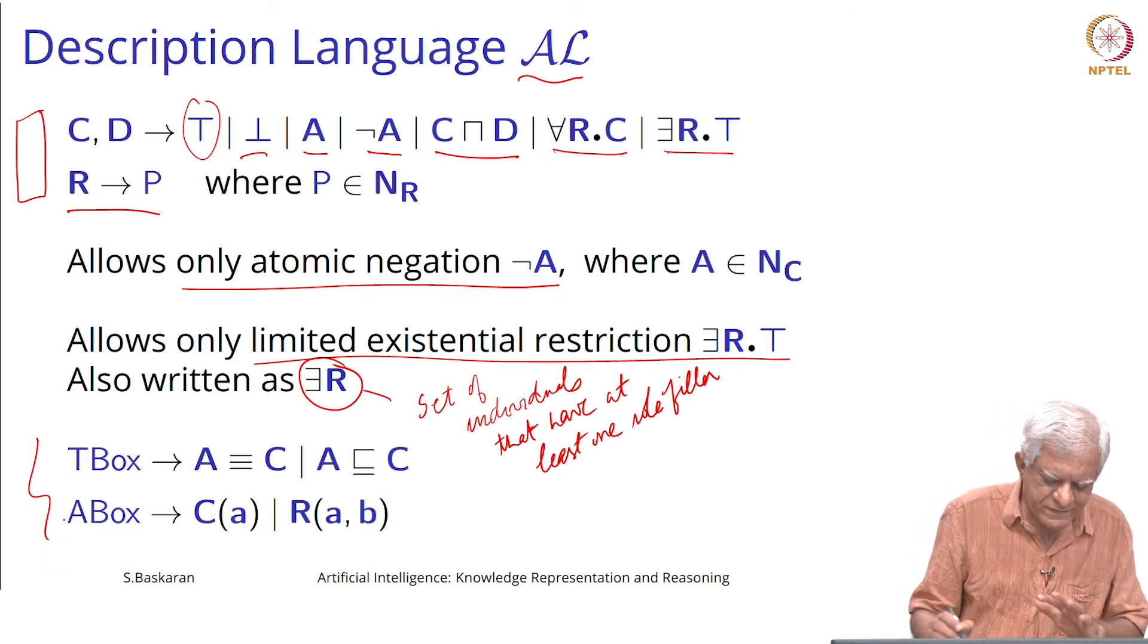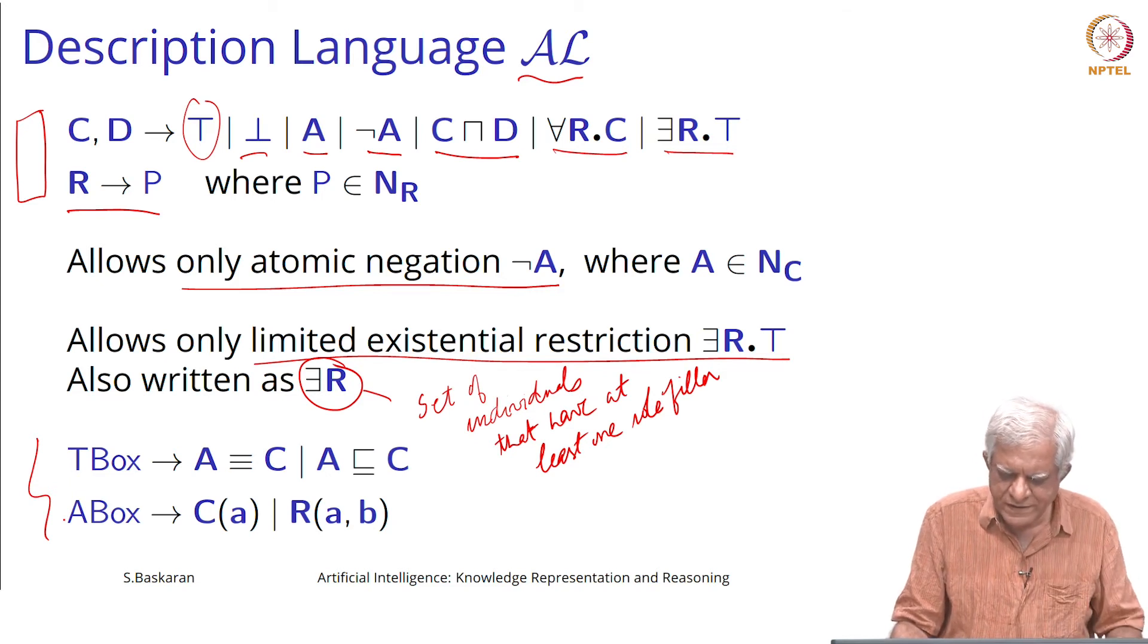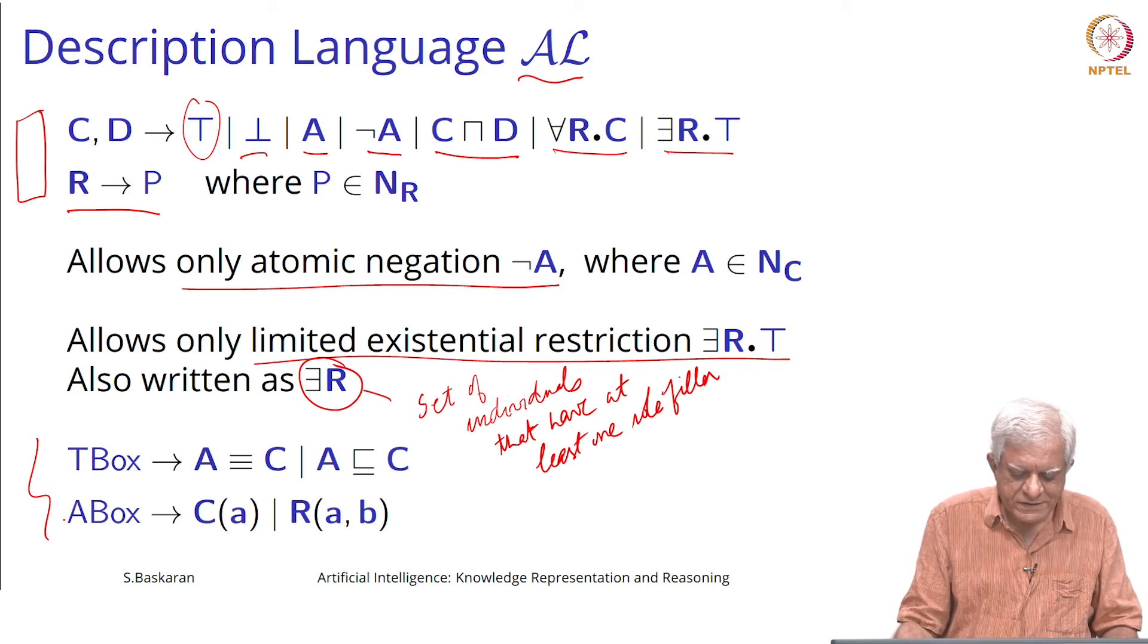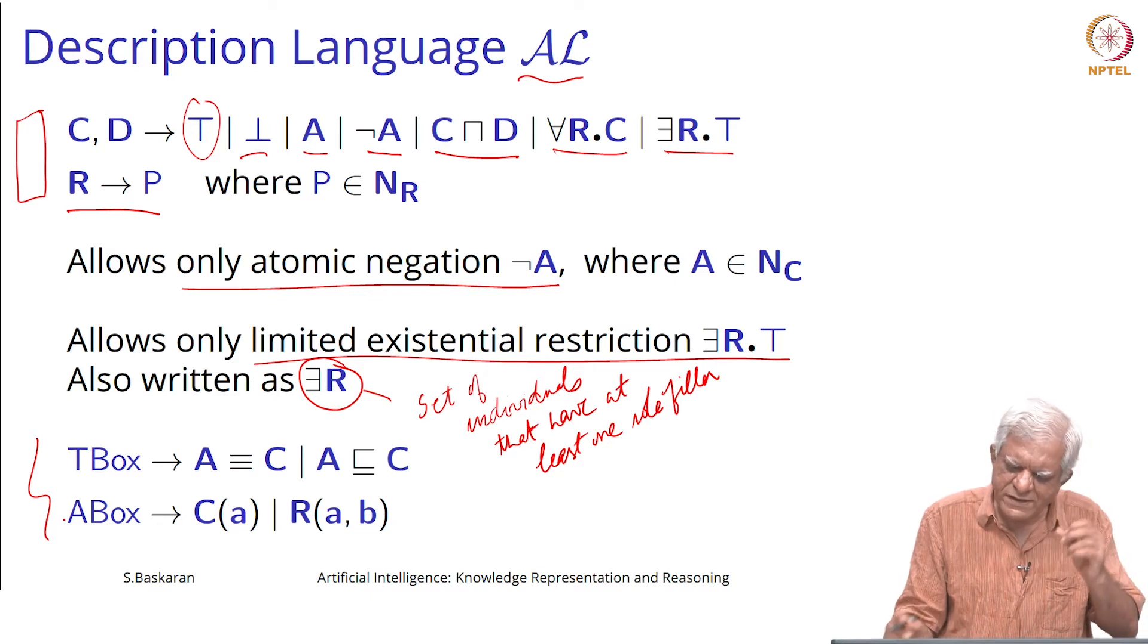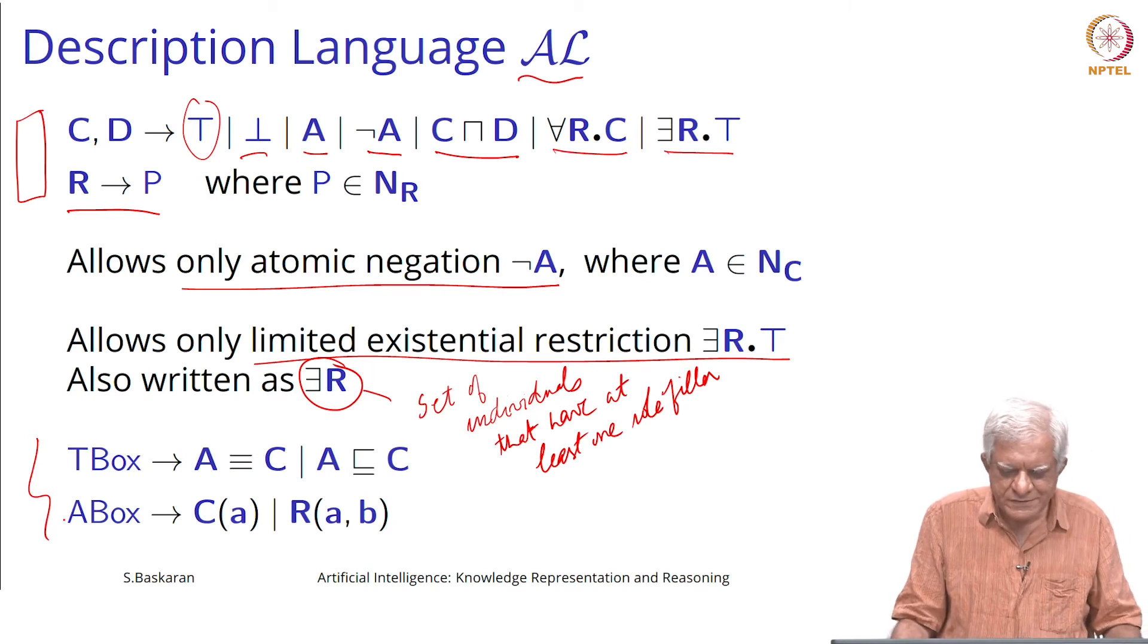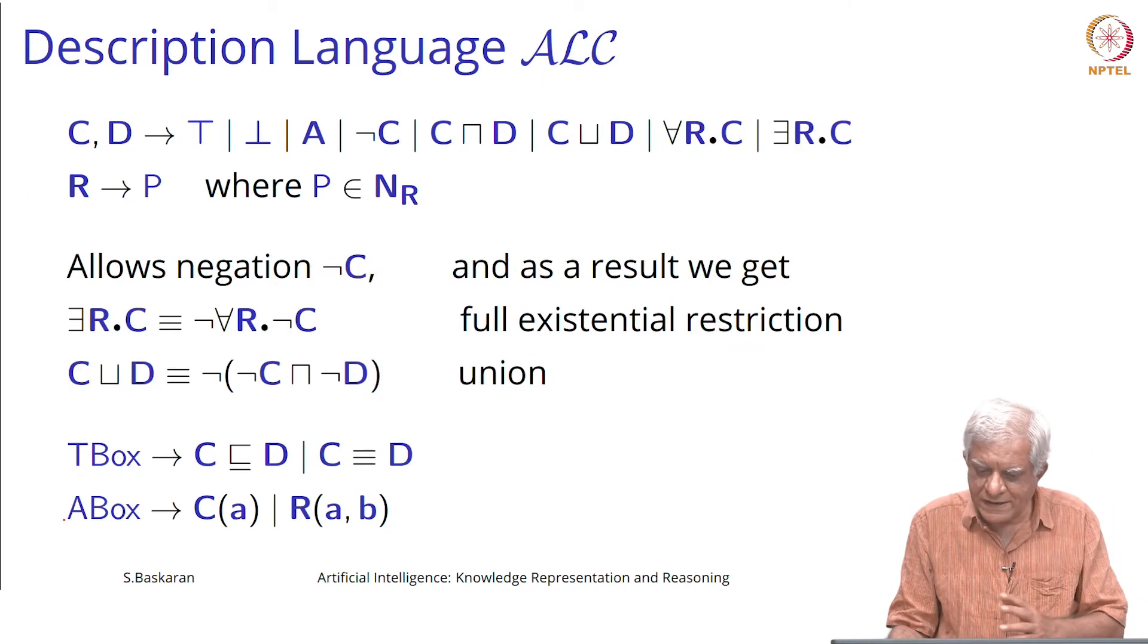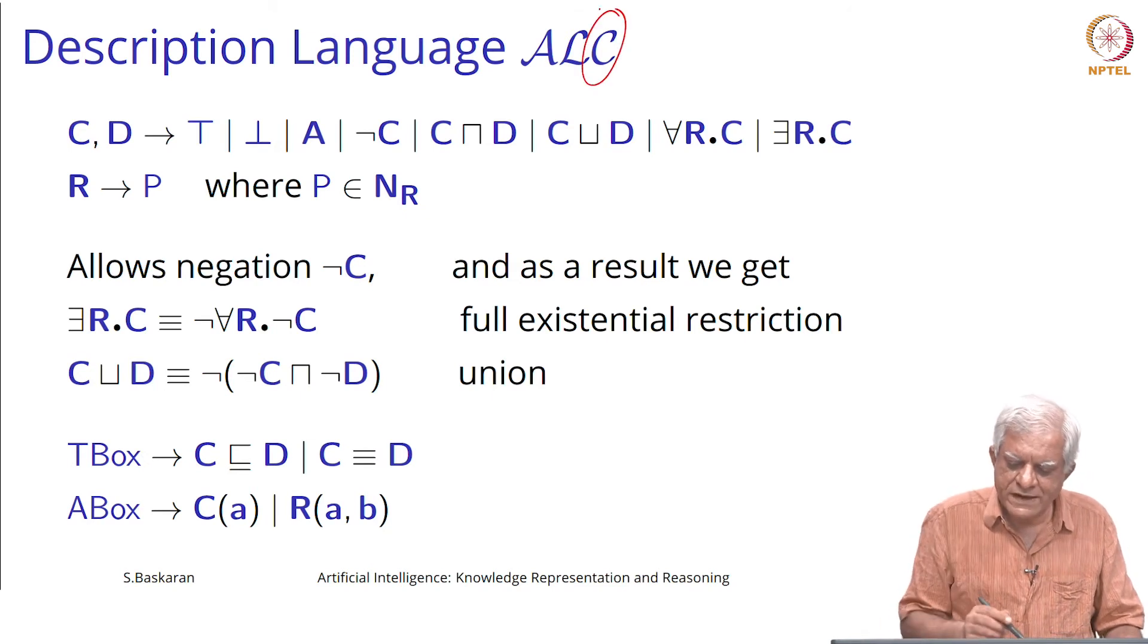The T-box and A-box will remain in the same at least for the first few languages that we will see. As you can see, this is a very simple language. It does not even allow you to talk about union of two sets, which is what the next language allows us to do which includes C which stands for complement.